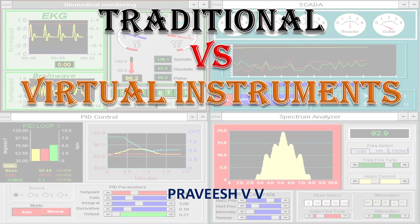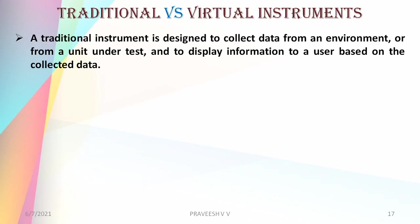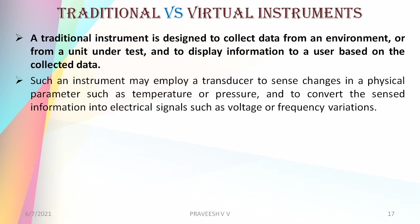A traditional instrument is designed to collect data from an environment or from a unit under test, and to display information to a user based on the collected data. Such an instrument may employ a transducer to sense the changes in a physical parameter such as temperature or pressure, and to convert the sensed information into electrical signals such as voltage or frequency variations.